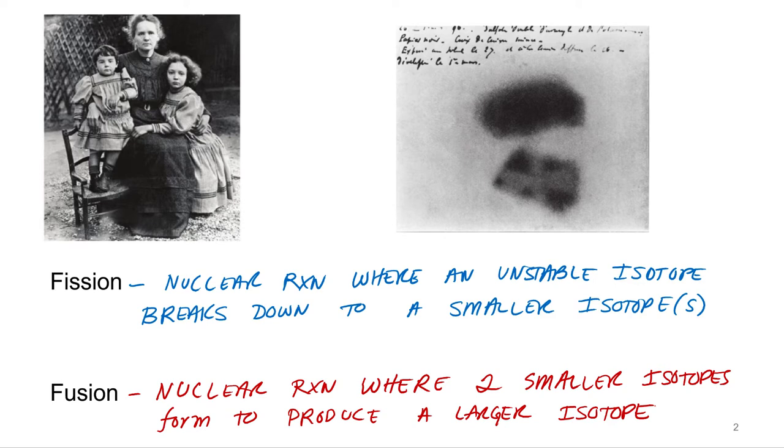You know what I always think about, though? The other daughter. Like, everybody wins Nobel Prizes. Like, you're eating dinner, everybody's got their big medals on. Like, you can't compete with that. That's a tough table to sit at.